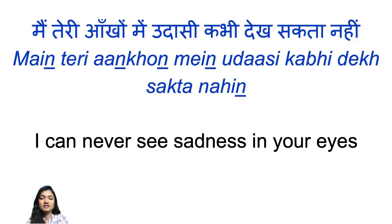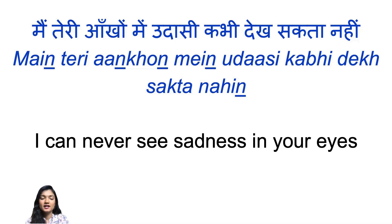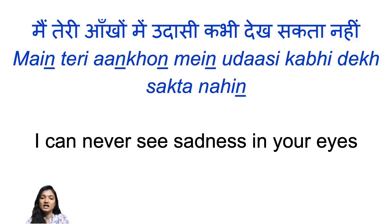All the underlined Ns are nasal sounds and there will be some words which will be repeated and I'll go over them again. Aankhye means eyes and when it is followed by a preposition it takes an O ending, so you cannot say aankhye mein, you must say aankhon mein. Udasi is sadness and it's a feminine noun. Kabhi dekh sakta nahi means can never see — kabhi nahi means never, dekh sakta is can see. This sentence means I can never see sadness in your eyes, or I can never see you sad.